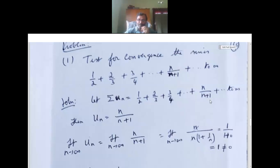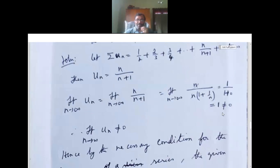Limit n tends to infinity un equals limit n tends to infinity n/(n+1). We remove n outside to get n divided by n times (1 + 1/n). The n and n cancel, and 1/n tends to 0 as n tends to infinity, so the limit equals 1/1 equals 1. And 1 is not equal to 0.